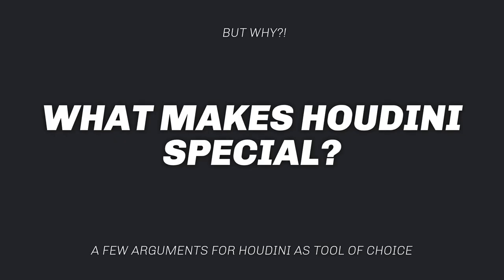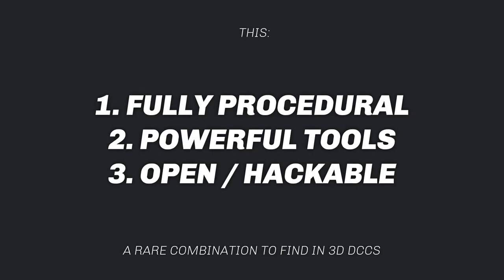Why did we make Houdini our main tool? What makes Houdini so special? First, it is fully procedural. That means not only will you be able to change and adapt your setups at any given point in a project, but also by just changing a few parameters, you might create totally new designs — very important when working with clients in advertising and commercials where deadlines are extremely tight and you often have to generate variations within a very short timeframe.